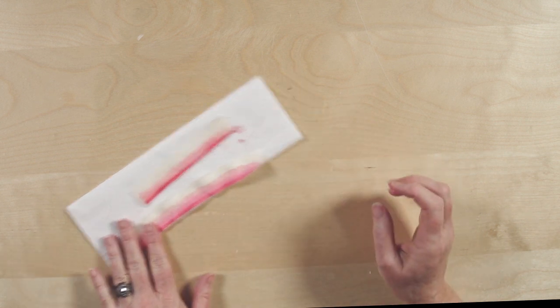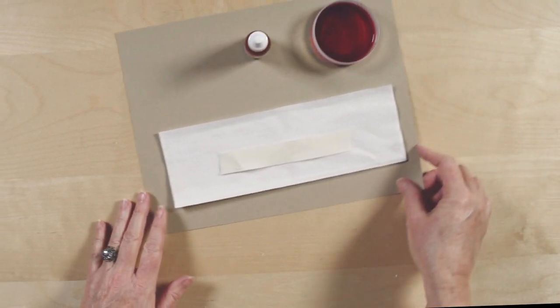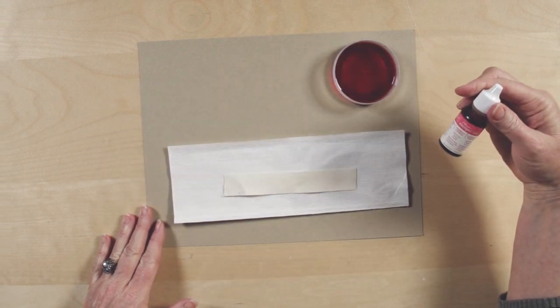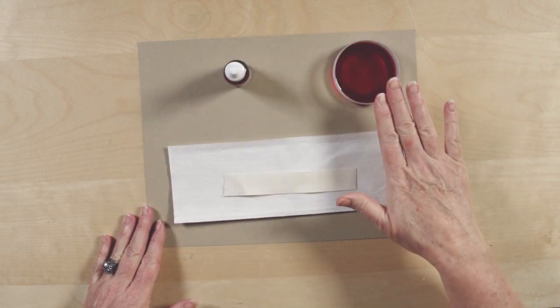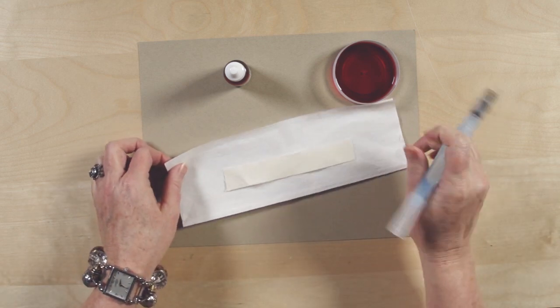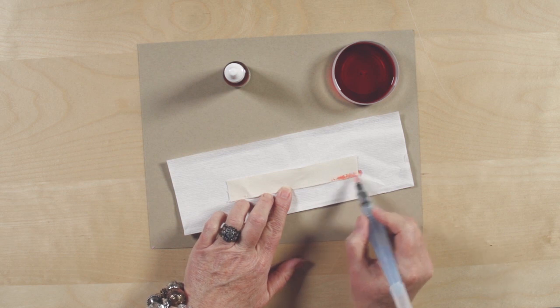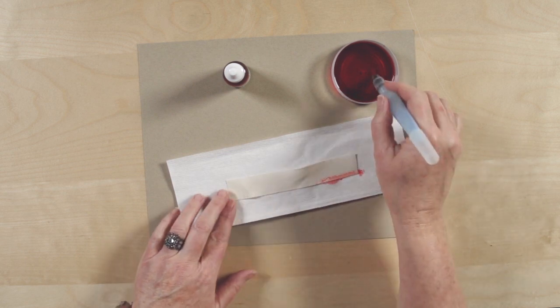Now another way you can do this is to use your aqua painter again and actually paint the colors on. So I've put about 10 drops of Strawberry Slush Reinker into a little empty button container. I'm going to use my aqua painter again, and I'll just dip it in and start applying the color to my ribbon.